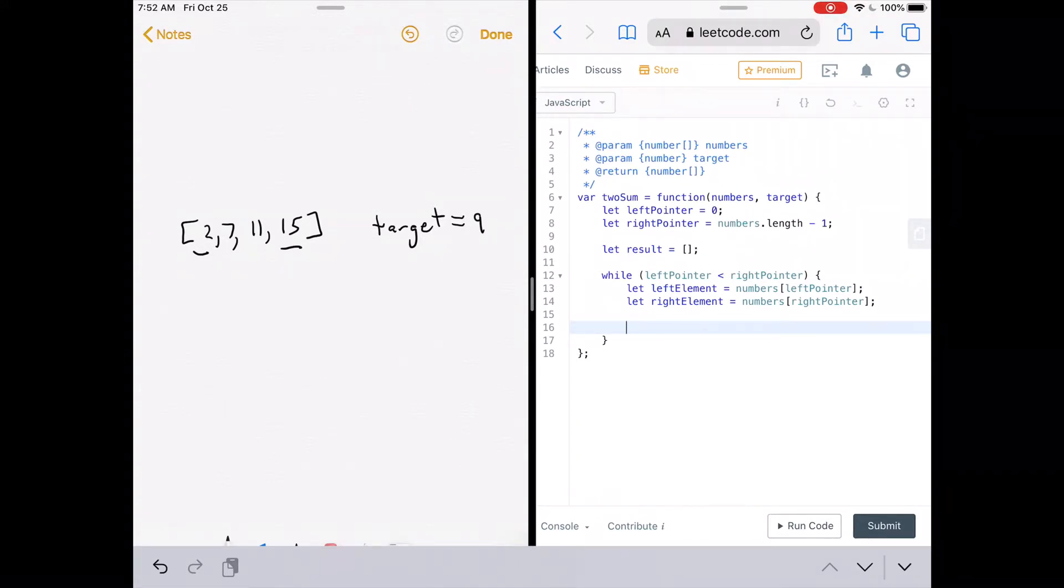This would be the number 15. Okay, so remember, the first thing we have to do is check to see if those two elements add up to the target. So if left element plus right element equals the target, what would we do, we would push the indices plus one into the result array, and then we would break out of the while loop. So that would look like this result, which is our result array dot push left pointer plus one and result dot push right pointer plus one. And then we would break.